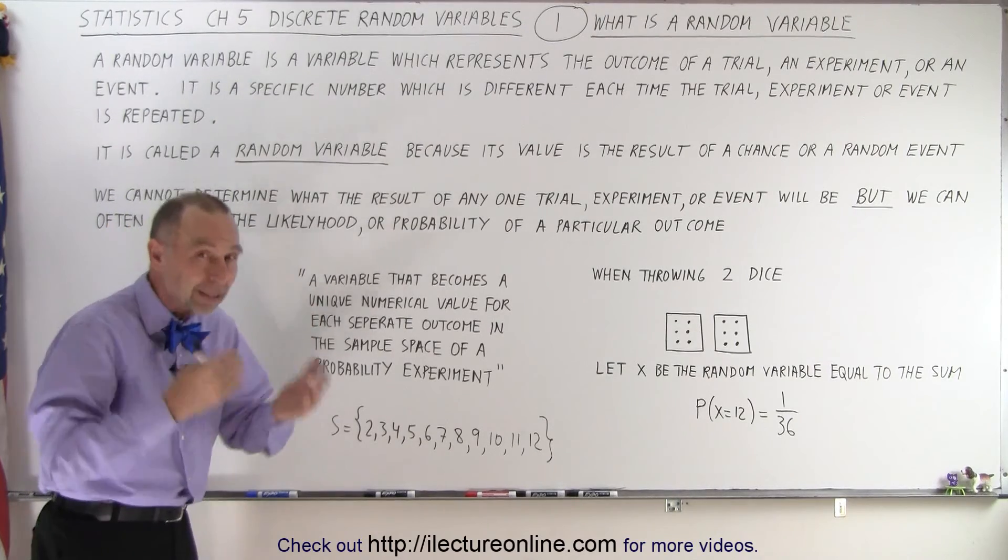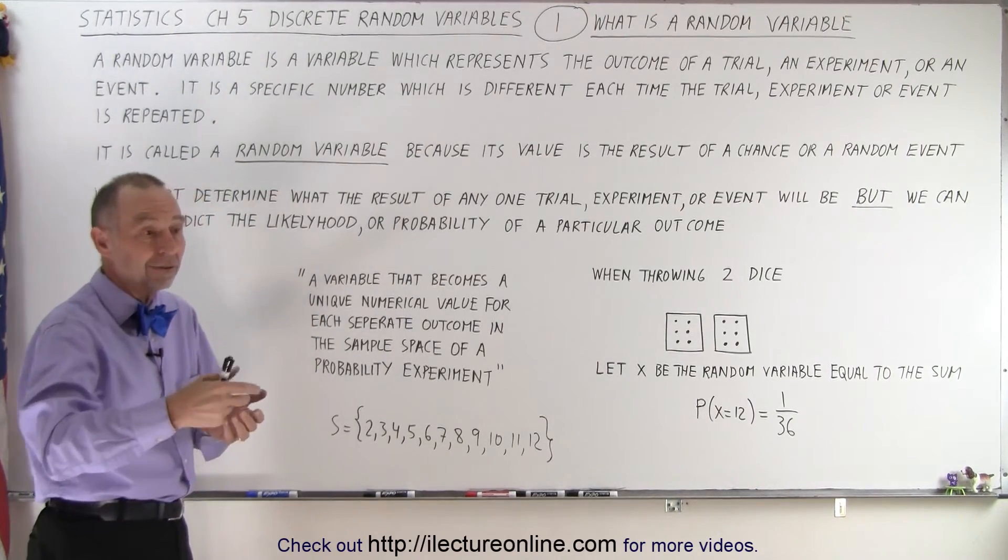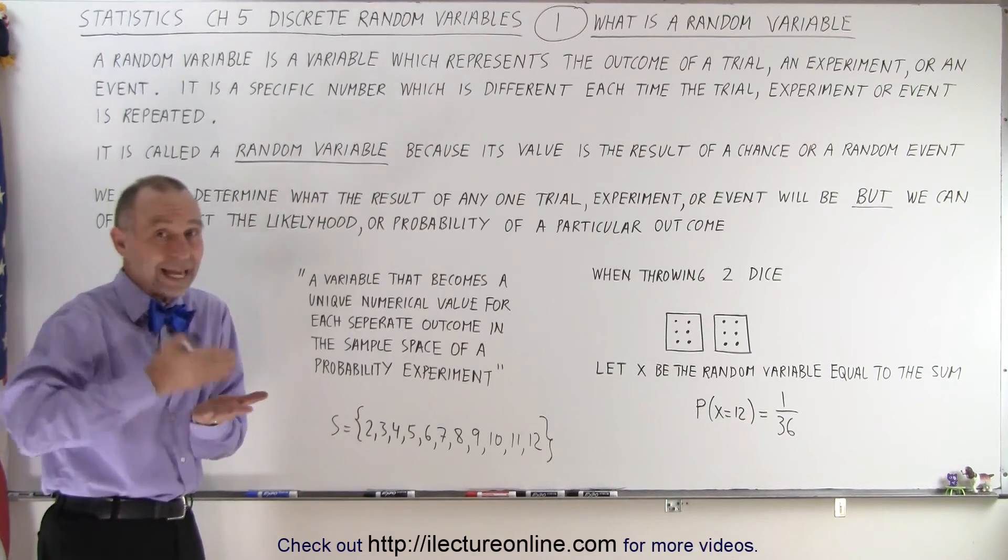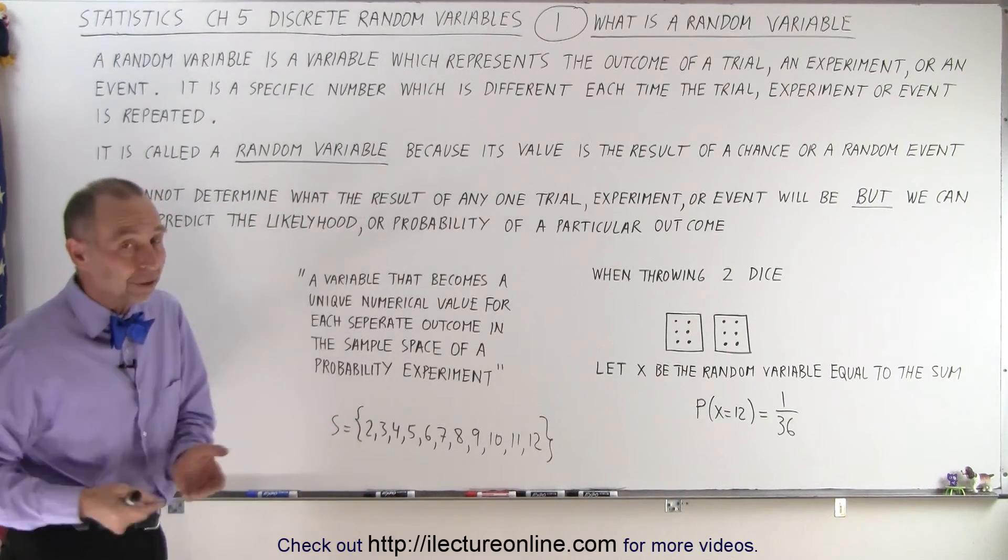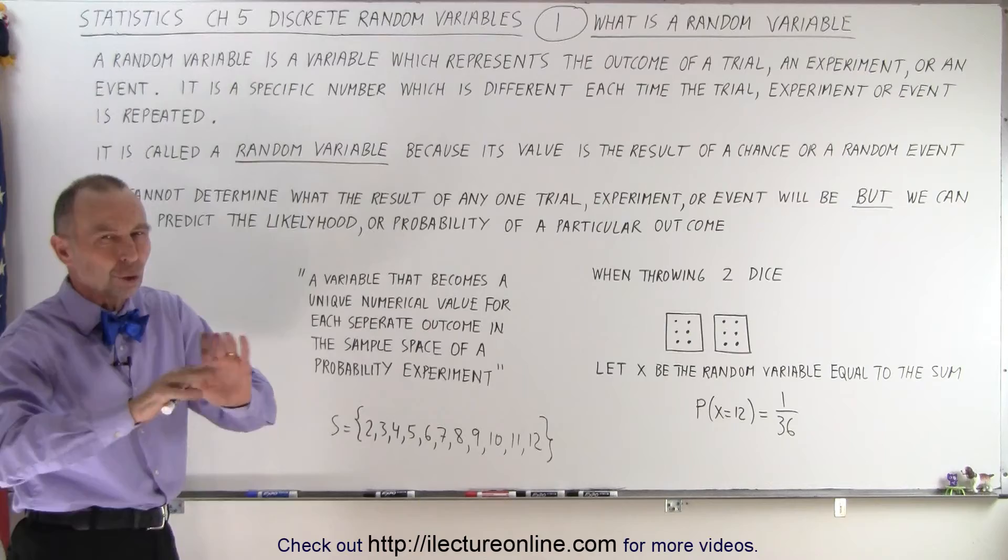So we can figure out the probability. If you throw a dice, you have a 50-50 chance there will be heads or a 50-50 chance there will be tails, but at any one time you don't know what you're going to get.